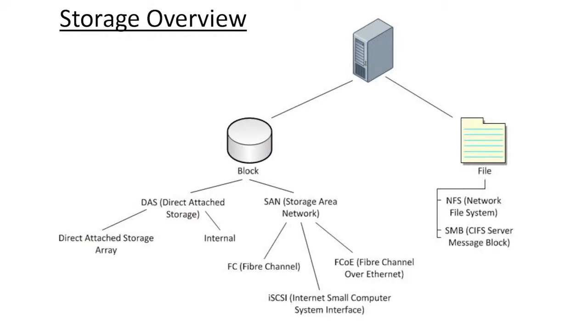I want to give an overview of storage — for most folks here this is really simple and redundant, but I want to make sure we set some common ground. If you look at a server, there are two ways to present storage to it: block-based storage and file-based storage. File-based storage traditionally is NFS or CIFS/SMB. If you want block-based storage, you'll either have a network you can attach to or directly attach it to the server. From a storage area network point of view, the three main protocols are Fibre Channel, FCoE, and iSCSI.